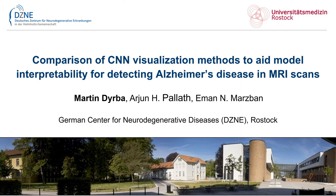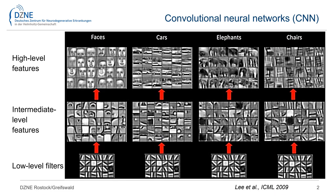Comparison of visualization methods to aid model interpretability for detecting Alzheimer's disease in MRI scans. Convolutional neural networks provide a powerful method for image discrimination and disease detection.